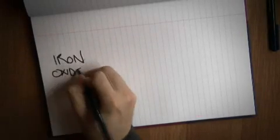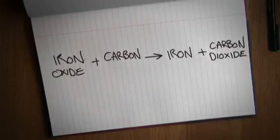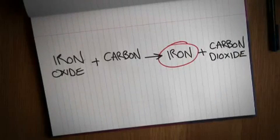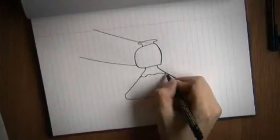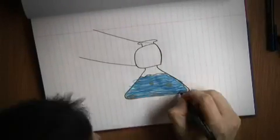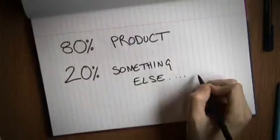Well it often isn't possible to get 100% yield. Some reactions convert the starting material into a mixture of different products, and only one might be the one you're trying to make. Or if the reaction's reversible, you might end up with some starting material that hasn't reacted in your solution.